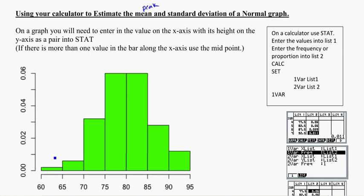If there's more than one value on a bar along the x-axis, we need to use the midpoint. What I'm saying here is that I've got a certain frequency of things that are between 60 and 65, for instance, so I need to use the midpoint.